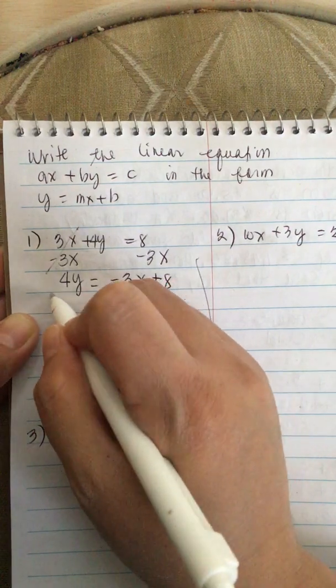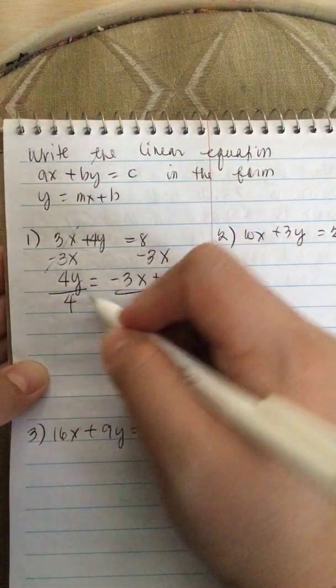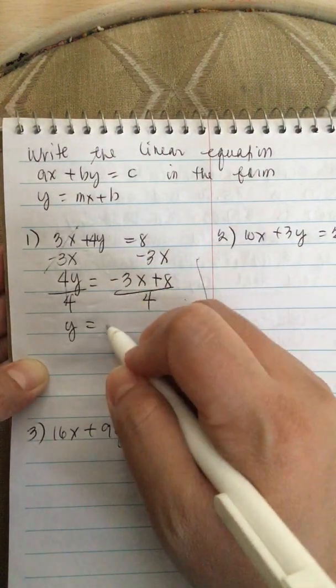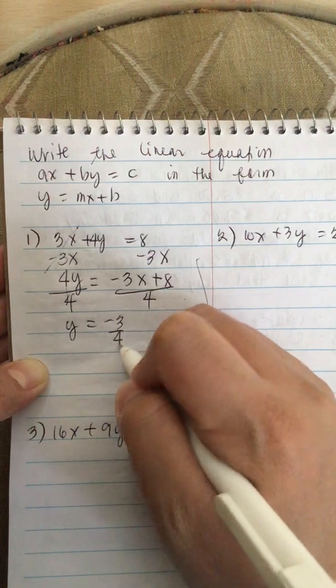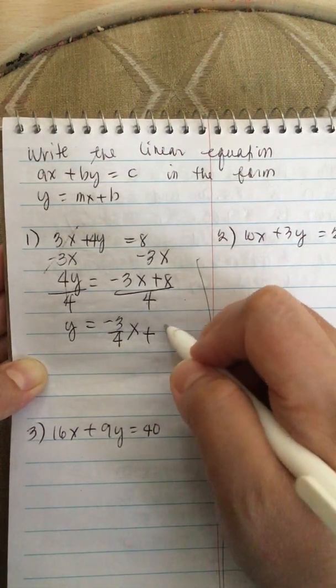Then we divide 4 on both sides of the equation. So we have Y is equal to minus 3 fourths X plus 8 divided by 4 is 2.